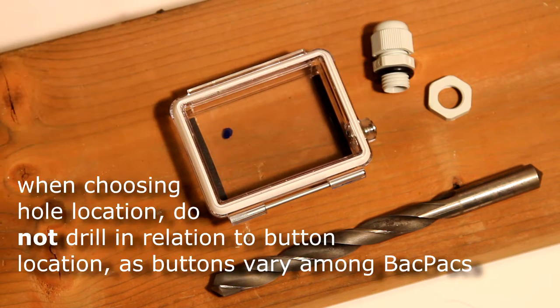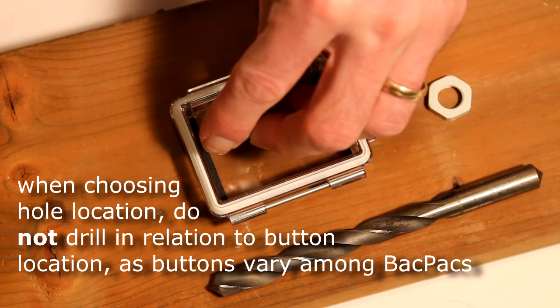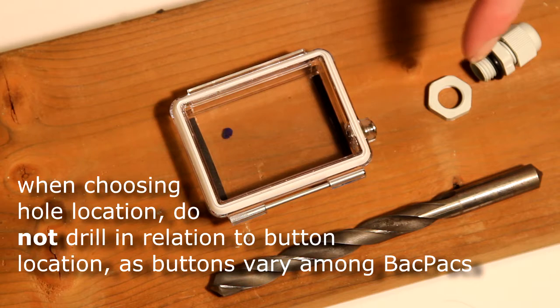I'm marking a dot at the opposite end from where the connector would go. I don't want the cable gland to impinge on the 30-pin connector cable when everything's connected.